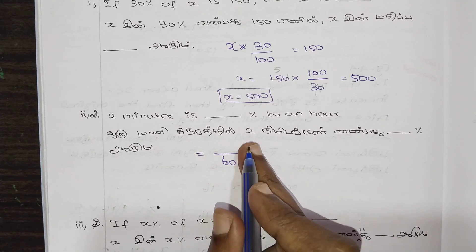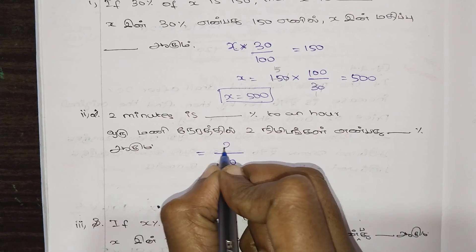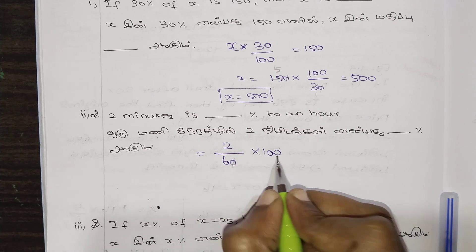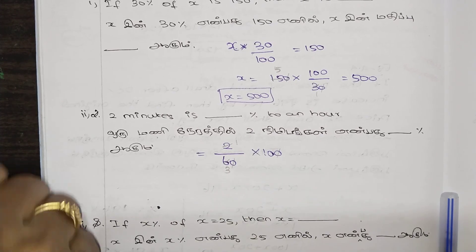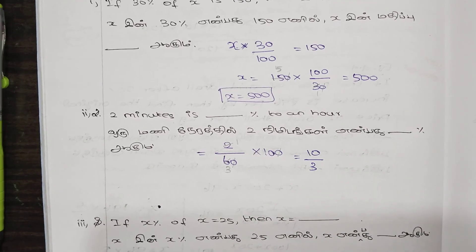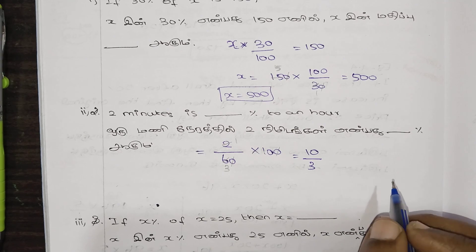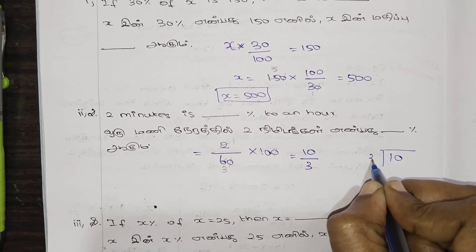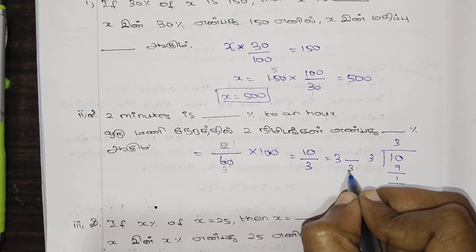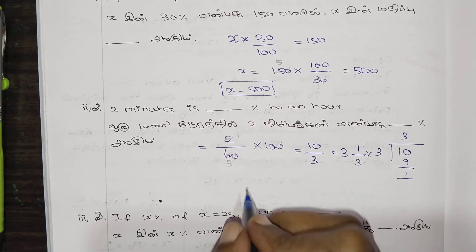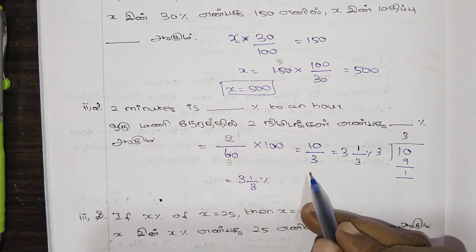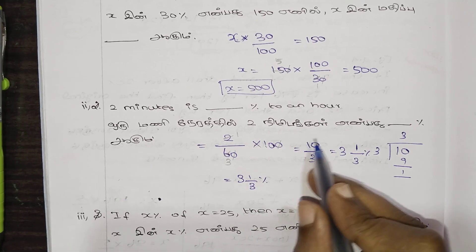So, percentage equals 2 by 60 into 100. Simplifying: 2 into 100 by 60. This gives 200 by 60, which simplifies to 10 by 3. That is 10 by 3 percent, which is 3 and 1 by 3 percent. The quotient is 3, and the remainder gives us 1 by 3, so the answer is 3 and 1 by 3 percent.